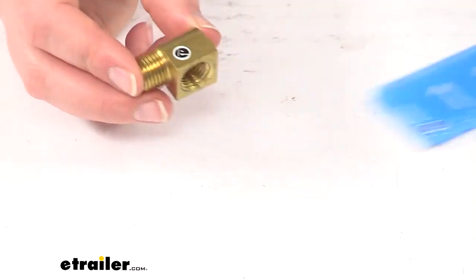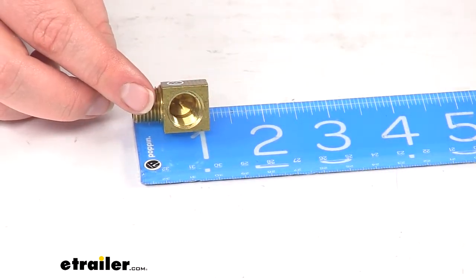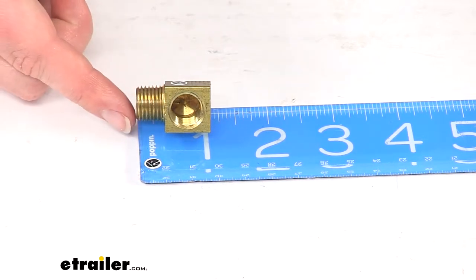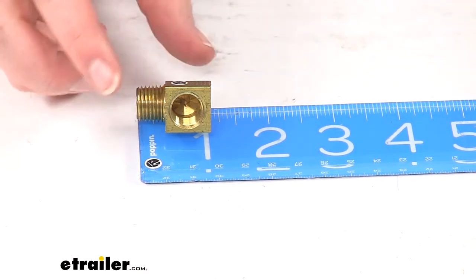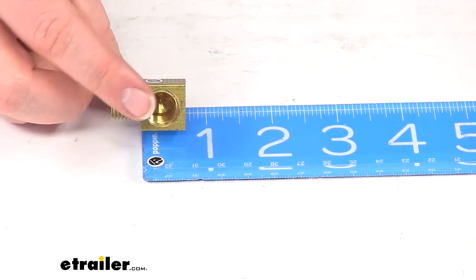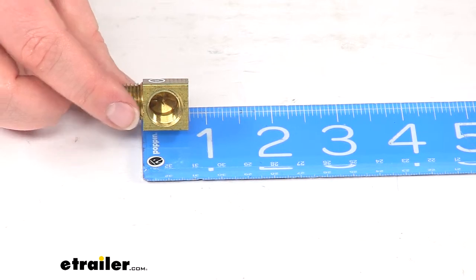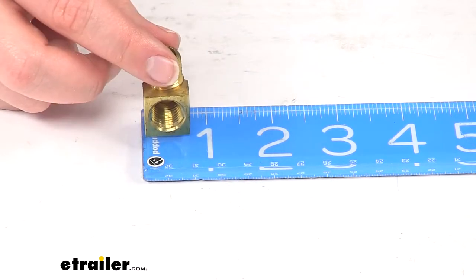Overall, this measures about an inch and an eighth long, going from the end of the threads to the top of the fitting. The fitting itself, minus the threads, is about three quarters of an inch by three quarters of an inch.